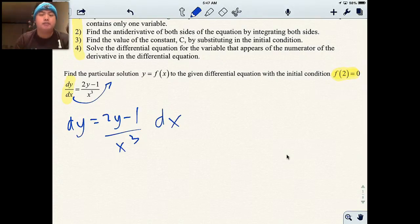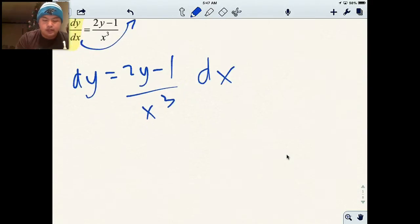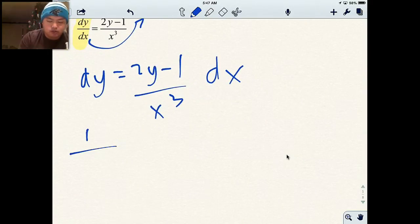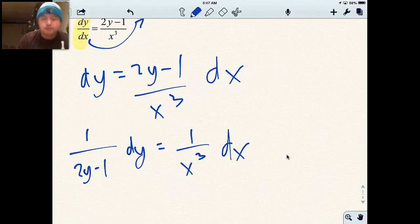I'm going to divide both sides by 2y minus 1. So now this is where I'm at. 1 over 2y minus 1 dy equals 1 over x to the third dx. What I do now is I'm going to take the antiderivative of both sides because I want to get rid of dy and dx. So I'm going to put an integration sign on both sides.